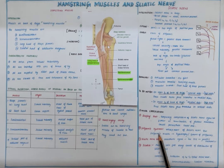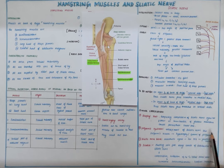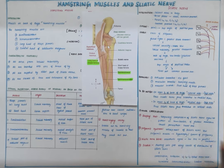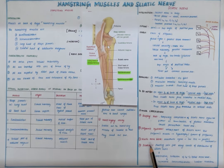The next is piriformis syndrome, where entrapment of the sciatic nerve occurs between the piriformis muscle due to either hypertrophy or spasm of the piriformis muscle, as the nerve is related above and below to the piriformis. The next one is sciatic nerve block, which is commonly used in anesthesia.